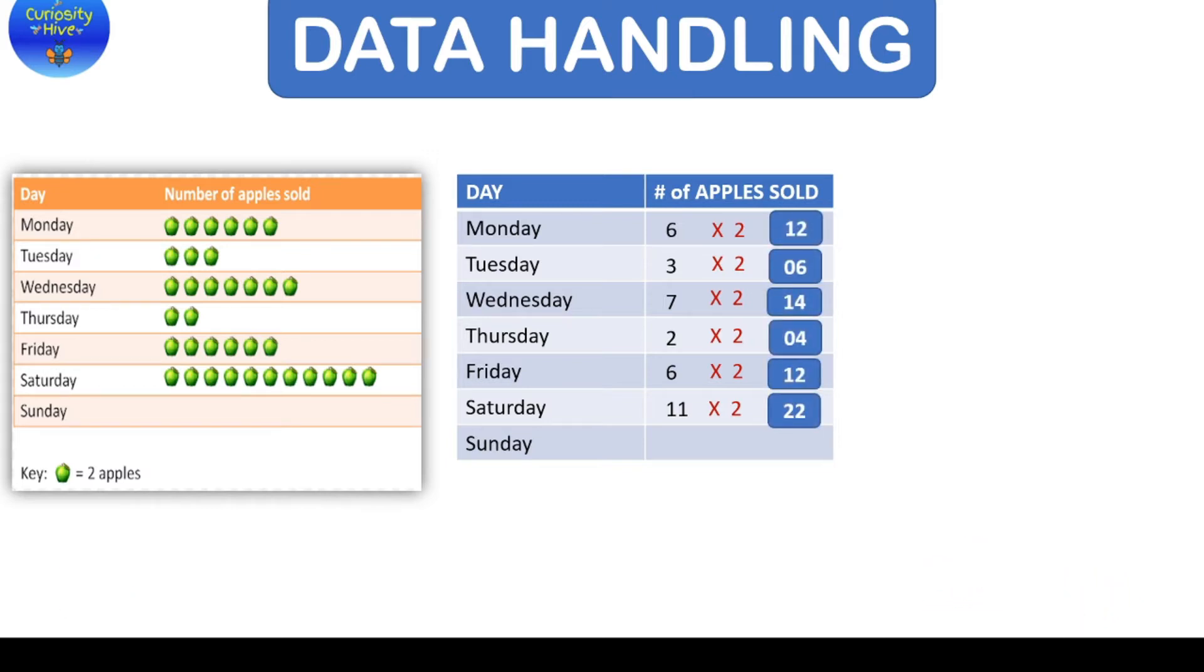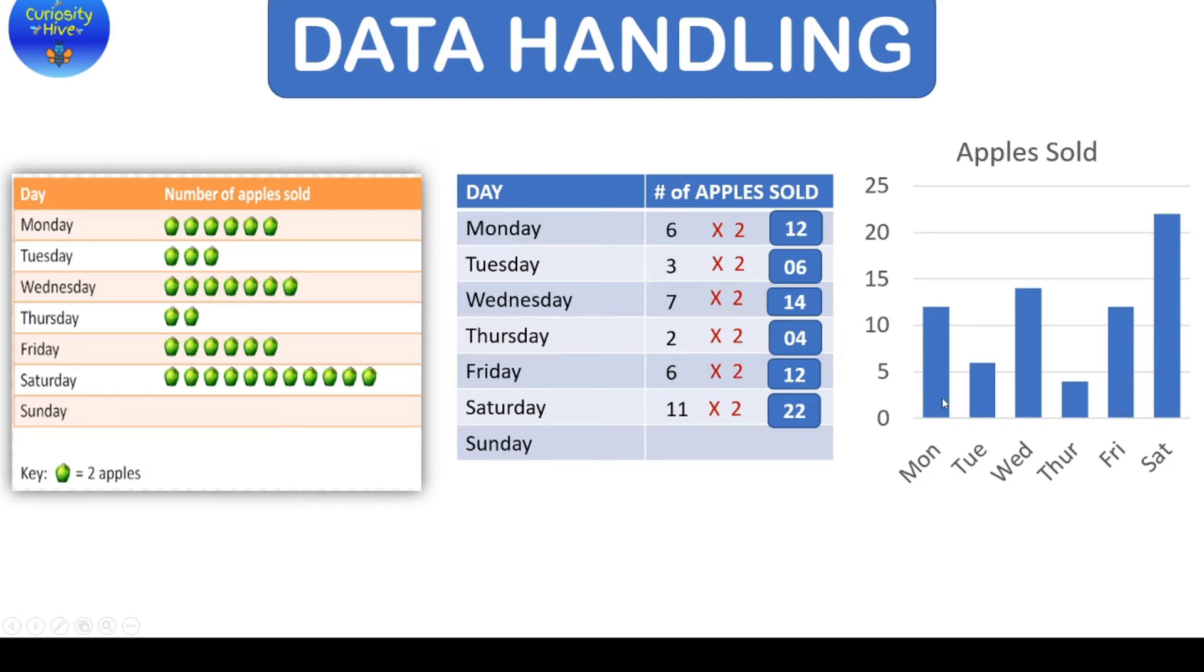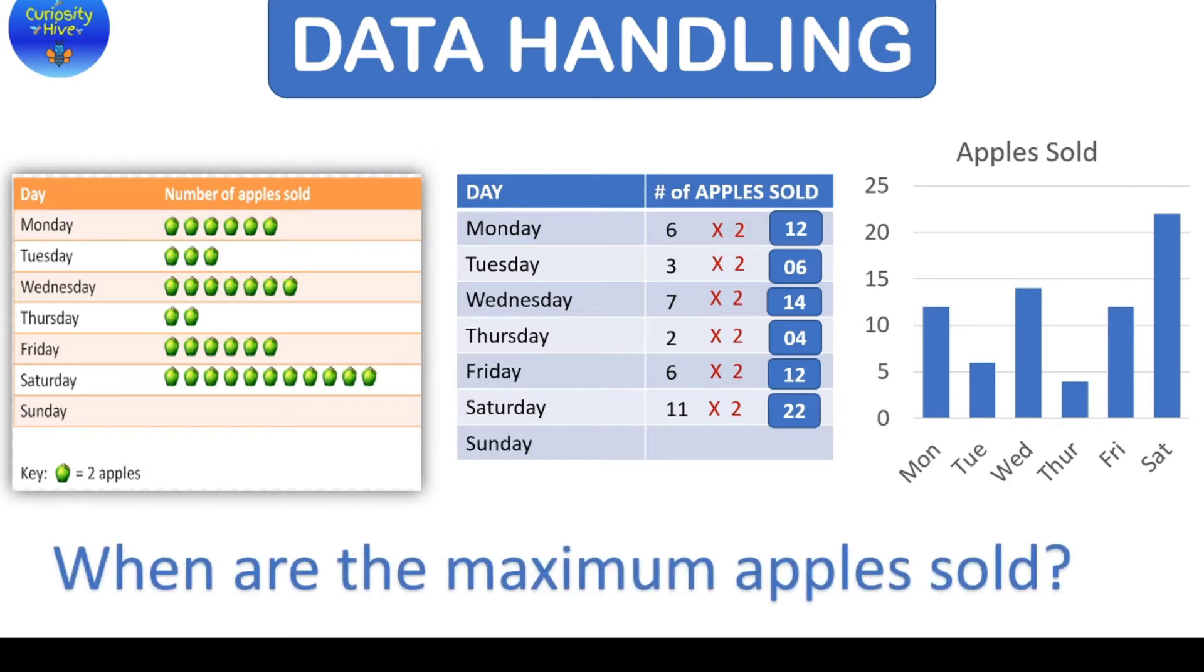The same thing in tabular form can also be depicted as a bar graph where we can plot the number of apples sold as rectangular columns and the days on the x-axis whereas the number on the y-axis which is the vertical axis. Now once we have this information, what are the kind of questions that we can look out for? For example, if the question asked is when are the maximum apples sold? That means on what day the number of apples sold are the most. Now clearly from the table, we just need to find the highest number which is on Saturday. Similarly, if a bar graph is given, we just need to look at the highest bar which is again on Saturday and then answer this question.